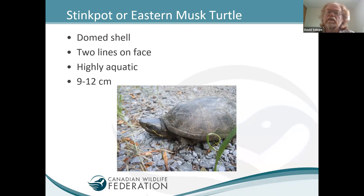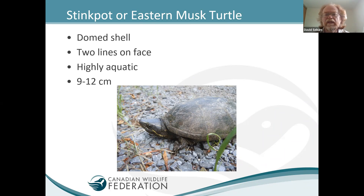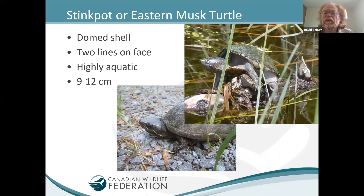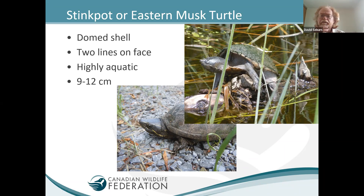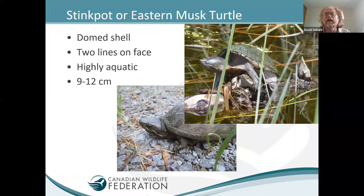The stinkpot or musk turtle is a fairly rare or cryptic species. It doesn't bask out of the water on logs like painted turtles do, so it's rarely seen. Typically it has two light-colored lines on the face — one above and one through the eye — though this is somewhat variable. The shell is highly domed compared to most species, and it's very aquatic. It's a very small turtle; a large musk turtle is only 12 centimeters in shell length.